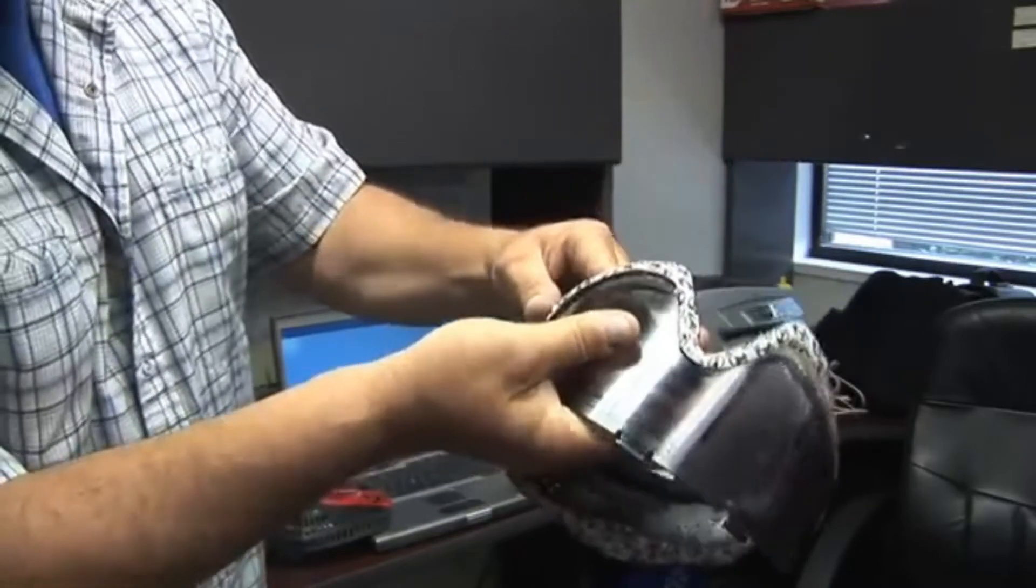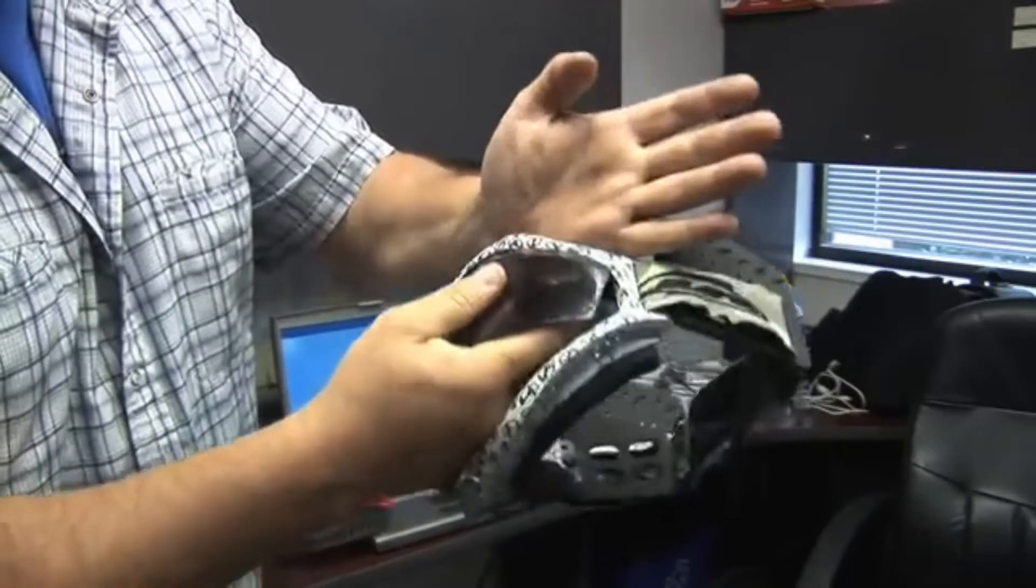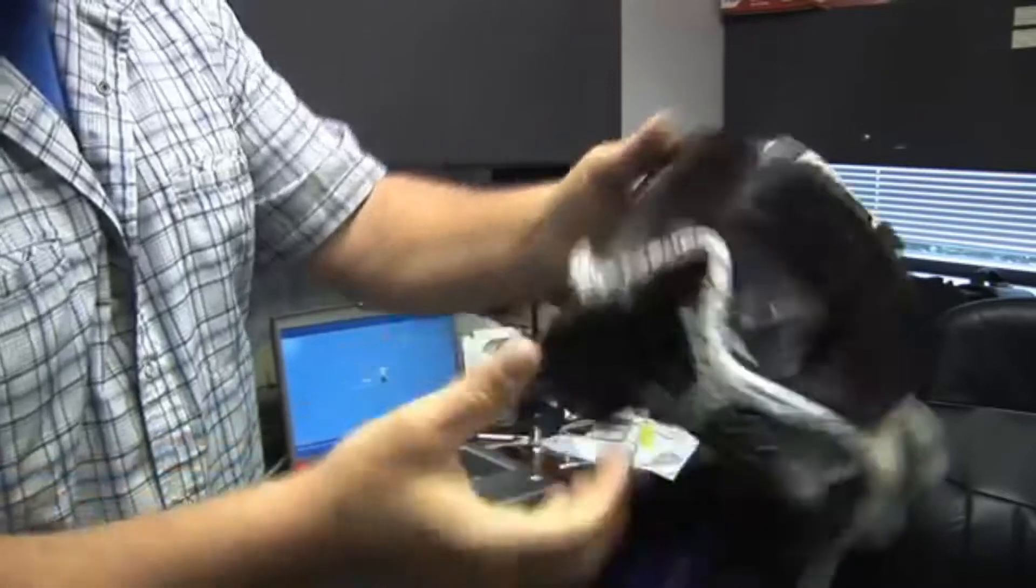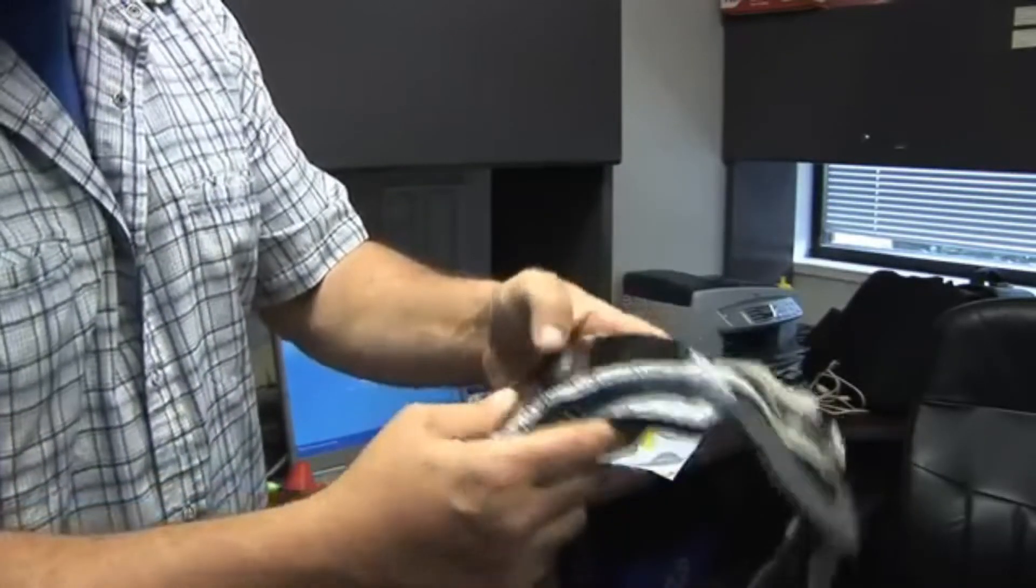Get it situated in the slot and then I just use the palm of my hand to roll it over. Same thing again on this side, palm of my hand roll it up, and then make sure it's oriented in those slots all the way around.